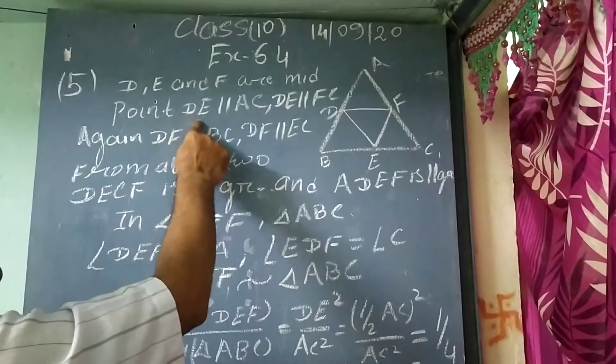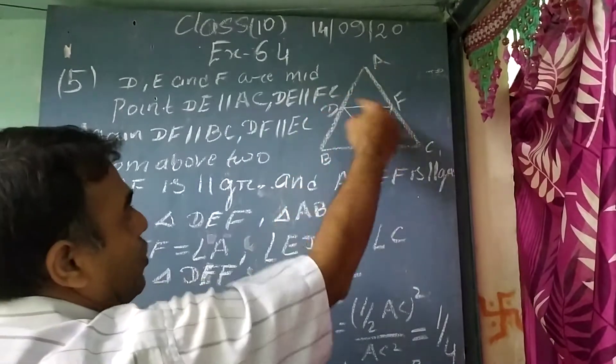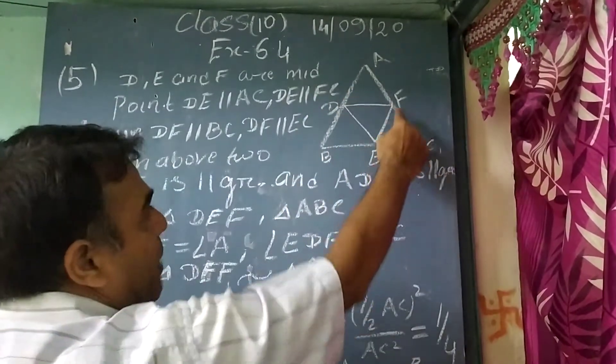And that is DE parallel to AC. So we have written here that DE is parallel to AC. So DE is parallel to FC.